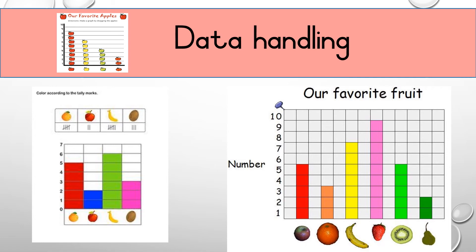On the graph you will see we coloured in five of the lemons. Then if we look at the tally marks of the apples, we see there are only two apples, so we colour in two blocks at the apples. At the banana, if we look at the tally marks, we see there are six tally marks, so we will colour in six blocks at the banana. Then if we look at the coconut, we will see there are only three tally marks, so we will only colour in three of the blocks.